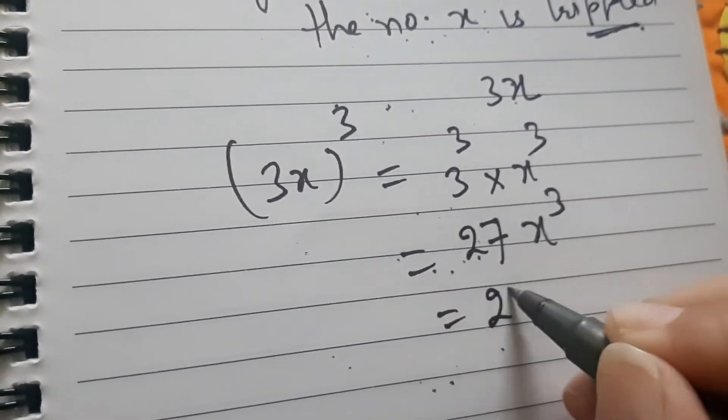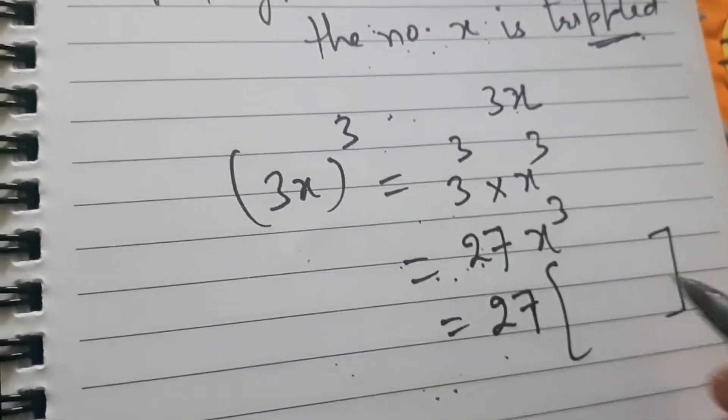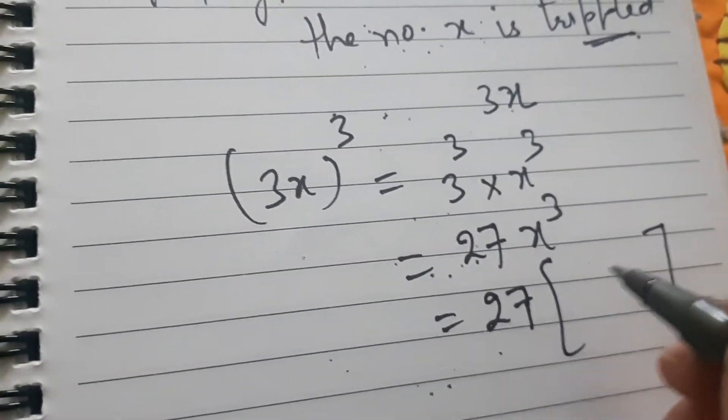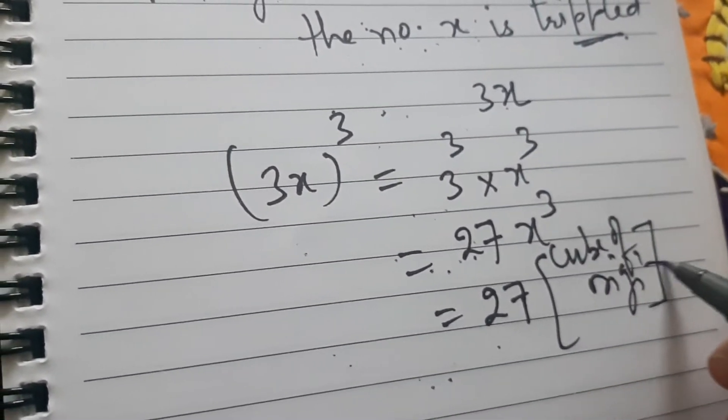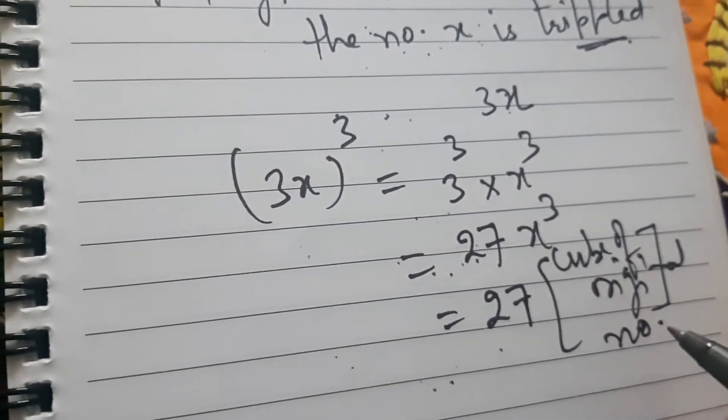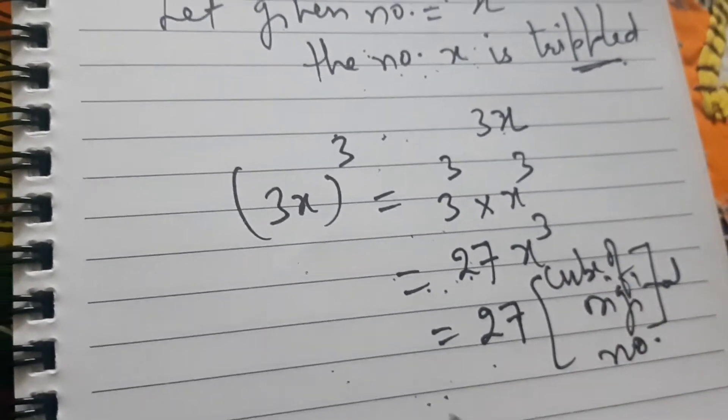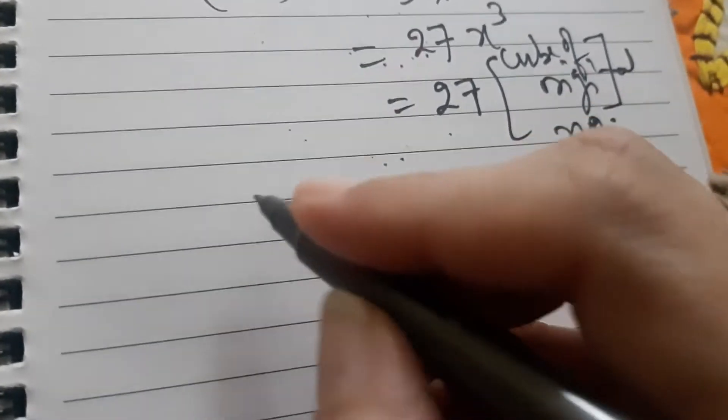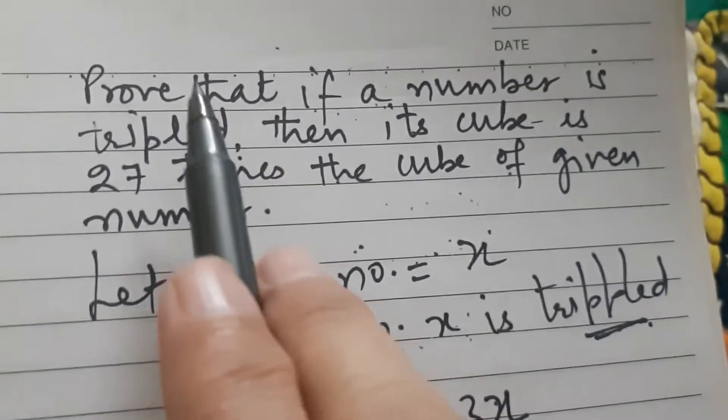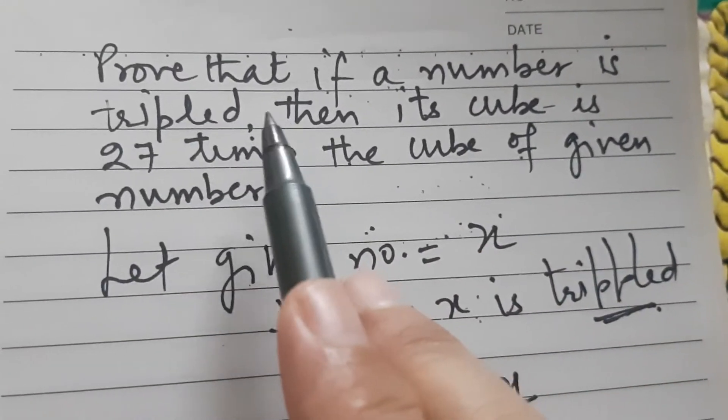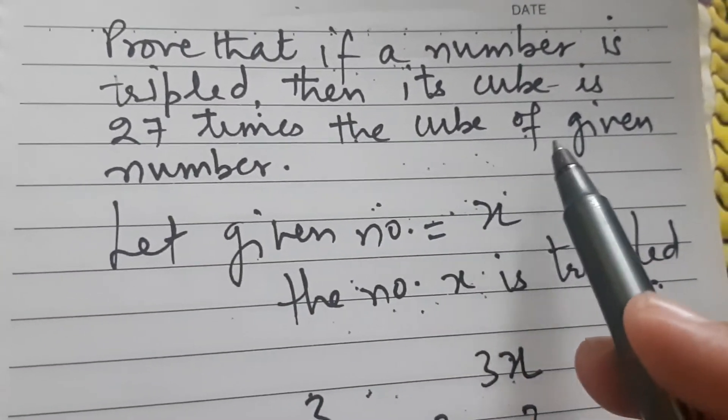So that is 27 times cube of the given number. That is cube of original number. What is the original number? Original number is x. So it is clear. Now you tell me, here it was given, if a number is tripled, then its cube is 27 times the cube of the given number.